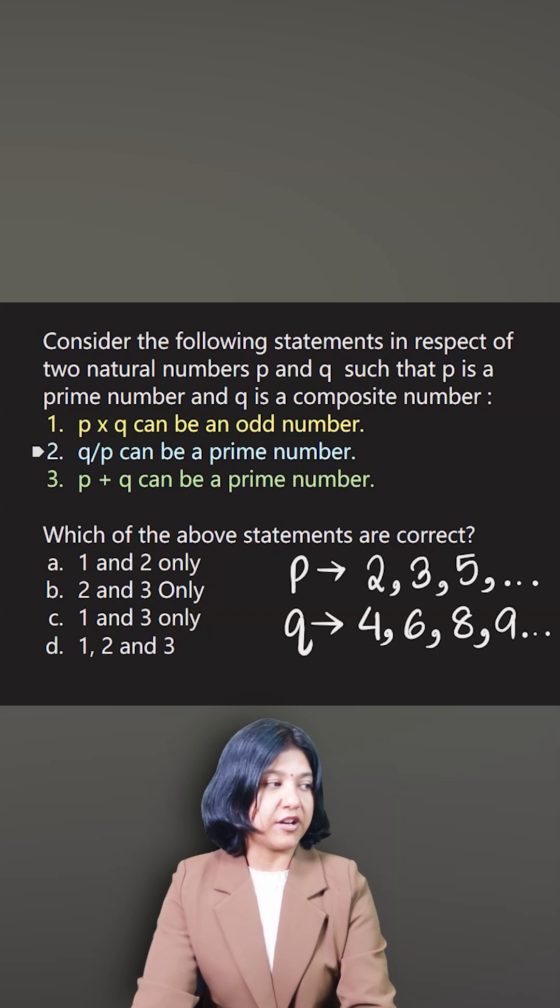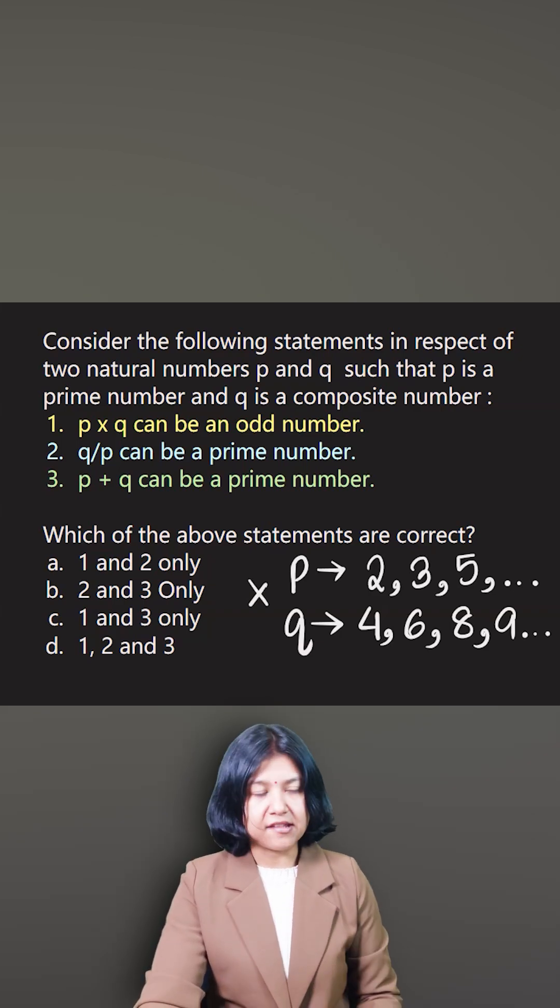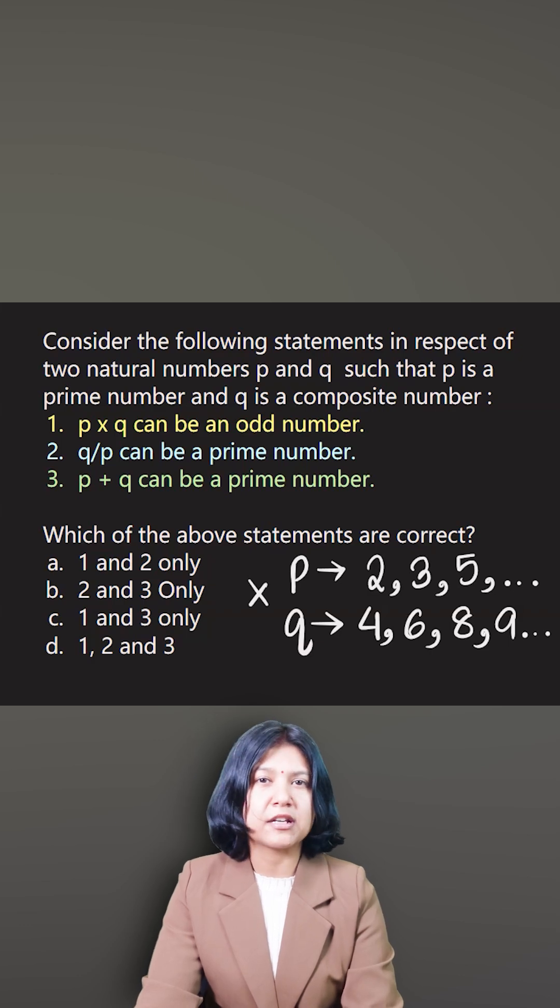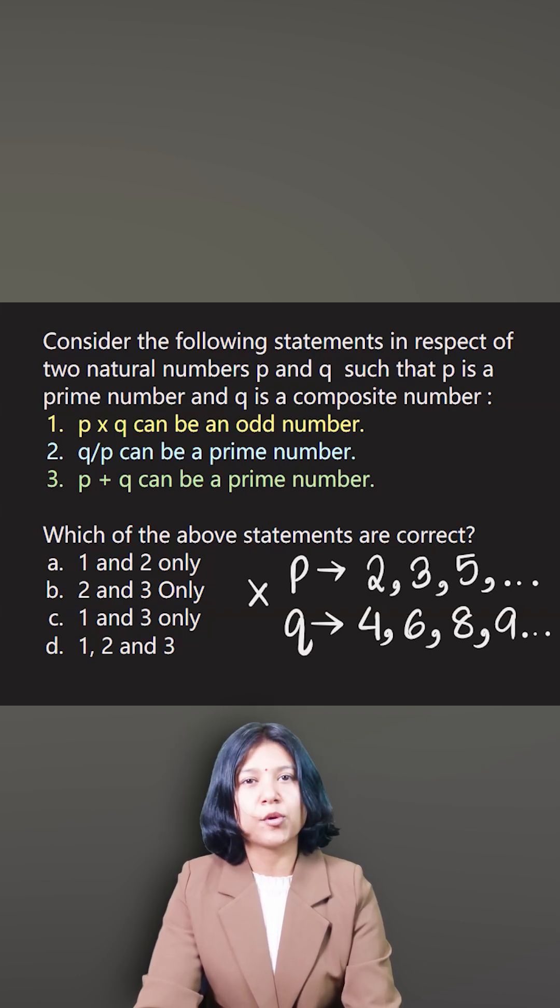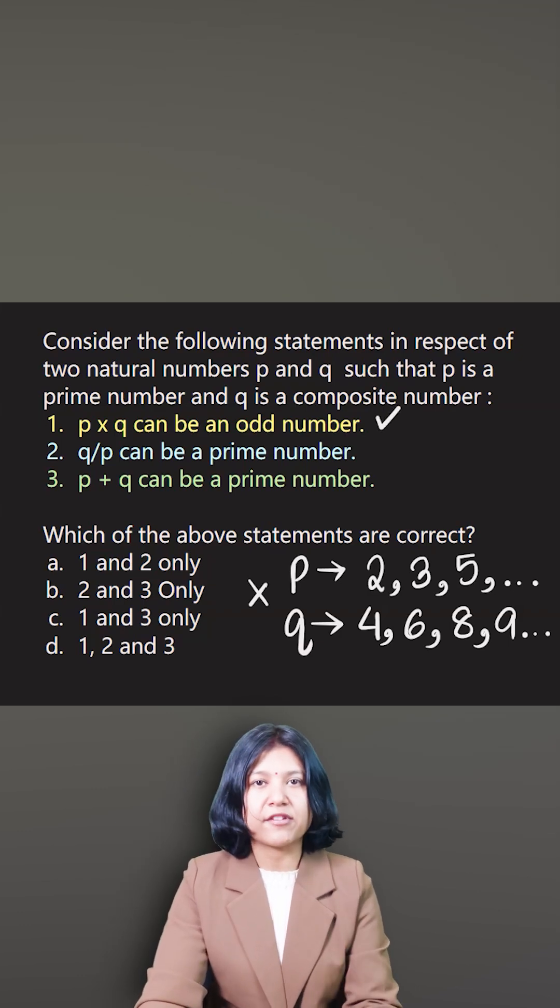The question tells you to verify if these statements are correct. P times Q can be an odd number - can it be odd? Yes, because the product is always odd when you multiply two odd numbers, and it's possible that both P and Q can be odd. So it is possible - 'can' as in you have an option.